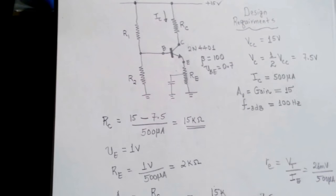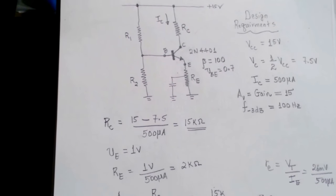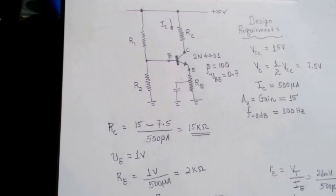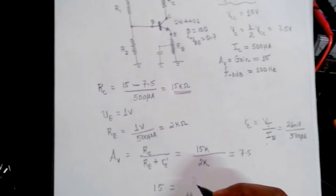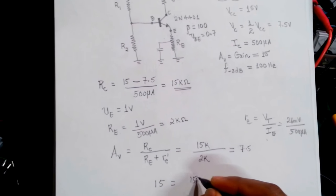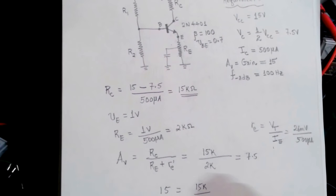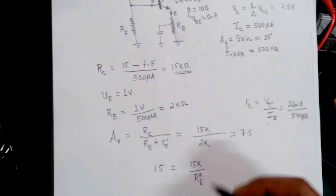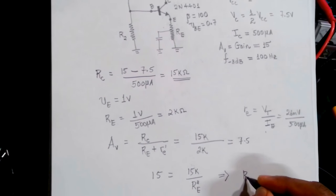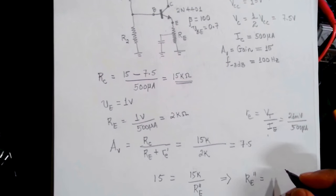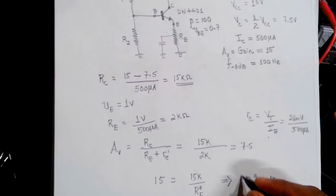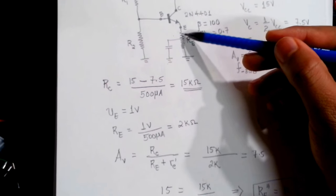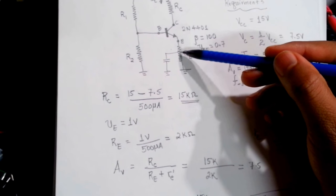We can easily determine the unbypassed portion because we know the gain is 15 and RC is 15k. So: 15 = 15k / R'E, which gives R'E = 1kΩ. So the part of RE that is not bypassed is going to be around 1kΩ. If we satisfy that, the gain will be where we want it, and we have designed the DC aspect of the amplifier.